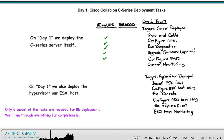Not all of the C-Series deployment tasks are required for BE6000 and BE7000 deployment — some of these tasks have been done for you by Cisco. We'll run through everything for completeness so that those not using the BE can see the whole process. Even if you are deploying a BE, you should still understand the tasks not necessary for its immediate deployment. For example, you may want to upgrade the firmware at some point or increase the size of the RAID array.